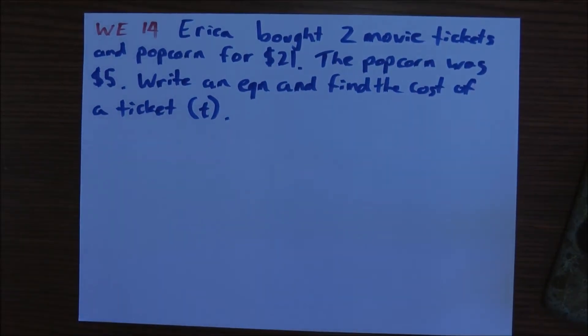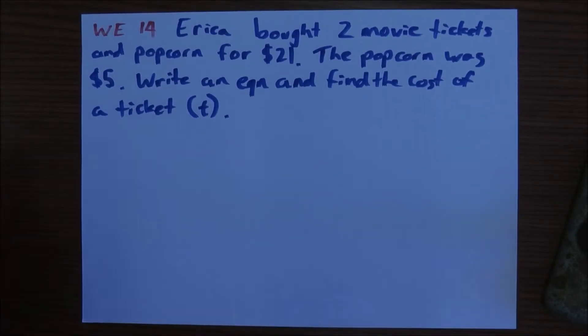Next one, worked example 14. Erica has bought two movie tickets and one bucket of popcorn for a total of $21. If the popcorn costs $5, how much does one movie ticket cost? Using T as the cost of a movie ticket, form an equation and solve it to find the value of T. And we're assuming that both tickets are the same price.